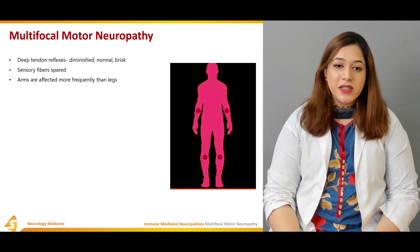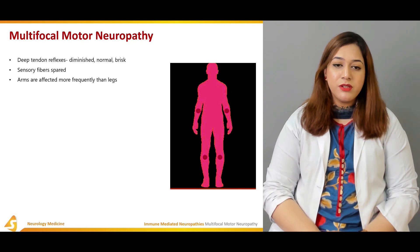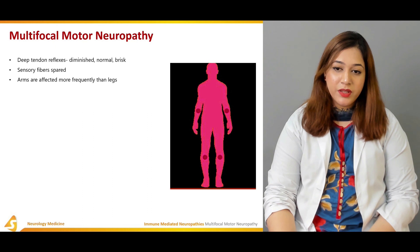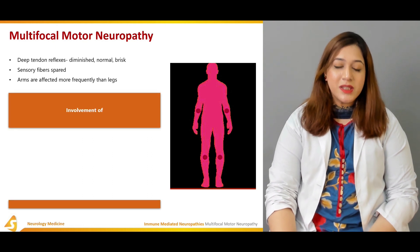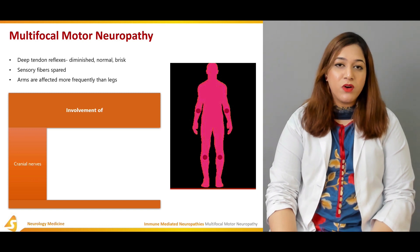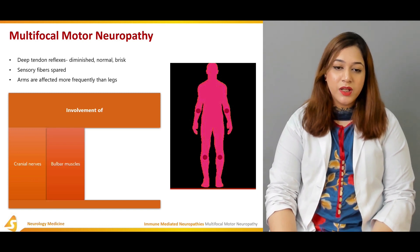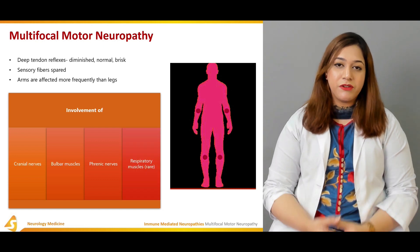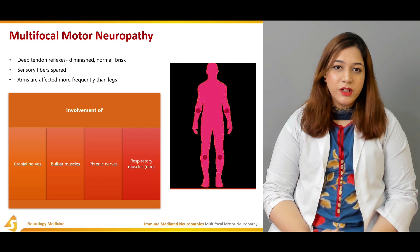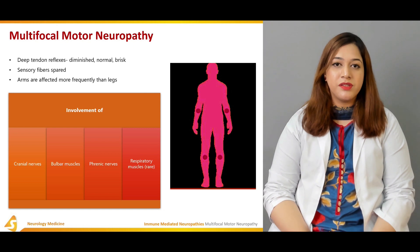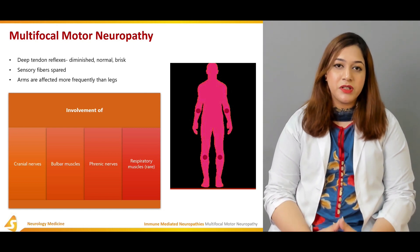MMN has a tendency to affect the upper limbs more frequently than the legs. In very rare cases, there might be involvement of cranial nerves, bulbar muscles, phrenic nerves, and respiratory muscles. This is very rare, and whenever a patient has involvement of any of these muscles or cranial nerves, they might require ventilatory support.